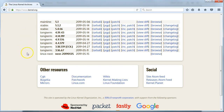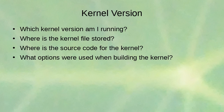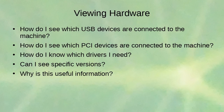Let's go back and see what drivers we actually need. You know what kernel version you're running, where it's stored, that the source code isn't there but you can get development headers, and what build options were used. Now you need to know what hardware you have on your system - which USB devices, which PCI devices, which drivers are being used, and specific version information. This is useful information.